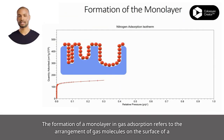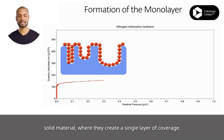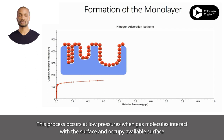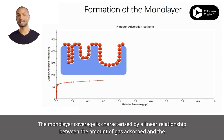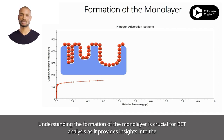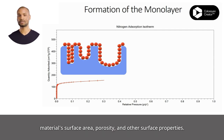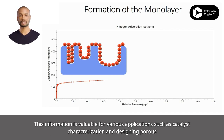The formation of a monolayer in gas adsorption refers to the arrangement of gas molecules on the surface of a solid material, where they create a single layer of coverage. This process occurs at low pressures when gas molecules interact with the surface and occupy available surface sites. The adsorption continues until the surface becomes saturated, meaning all available sites are occupied. Understanding the formation of the monolayer is crucial for BET analysis, as it provides insights into the material's surface area, porosity, and other surface properties, valuable for applications such as catalyst characterization and designing porous materials.